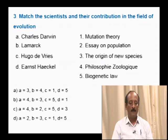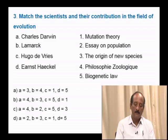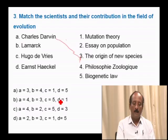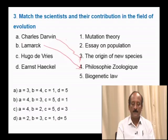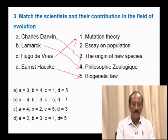Question number 3: Match the scientist and their contribution in the field of evolution. Charles Darwin wrote a book called 'The Origin of Species by Natural Selection'. Lamarck wrote a book called 'Philosophiae Zoologica', in which he explained his ideas about evolution. Ernst Haeckel proposed the biogenetic law, which states that ontogeny recapitulates phylogeny. The correct answer is option A.